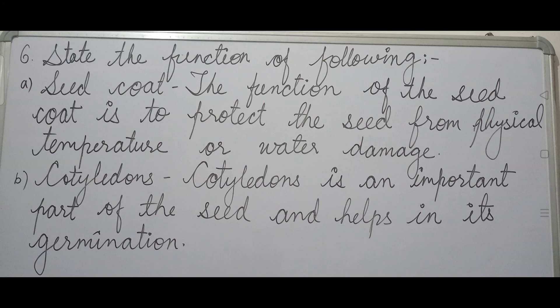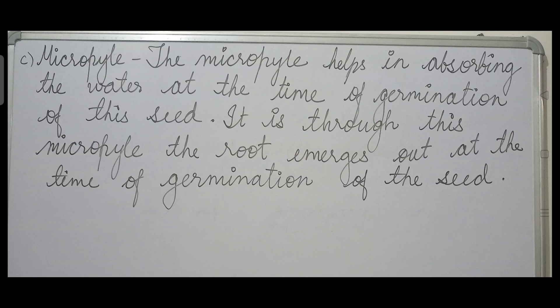Last question: state the function of seed coat, cotyledons, and micropyle. The function of the seed coat is to protect the seeds from physical, temperature, or water damage. Cotyledons are an important part of the seed and help in its germination. The micropyle helps in absorbing water at the time of germination, and through the micropyle the root emerges out.